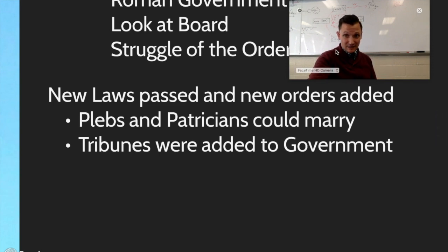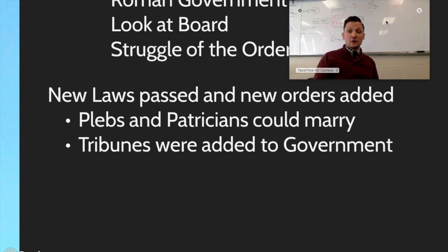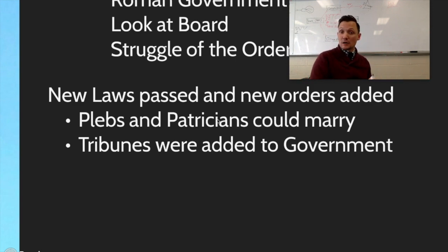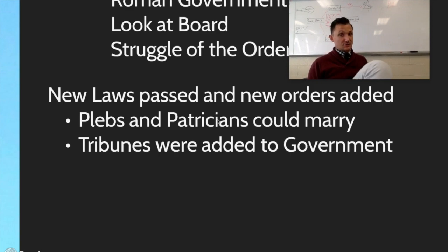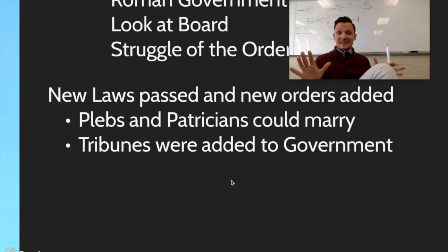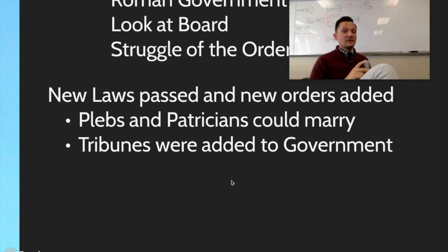Underneath the second chart behind me, where you see 'veto' in Latin and what it means, write down that new laws are going to be passed and new orders are going to be added. For example, plebes would now be allowed to marry patricians — that was a big one. Before the struggle of the orders, plebes could not marry patricians, but now the classes could mix. Tribunes are going to be added to the government — the ten plebes given the power of the veto to counteract the Senate.